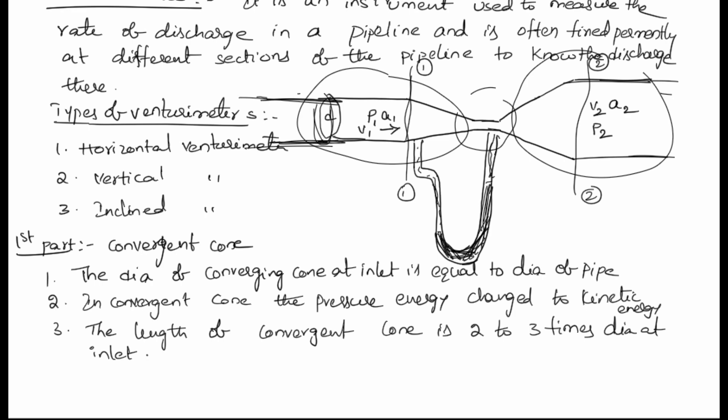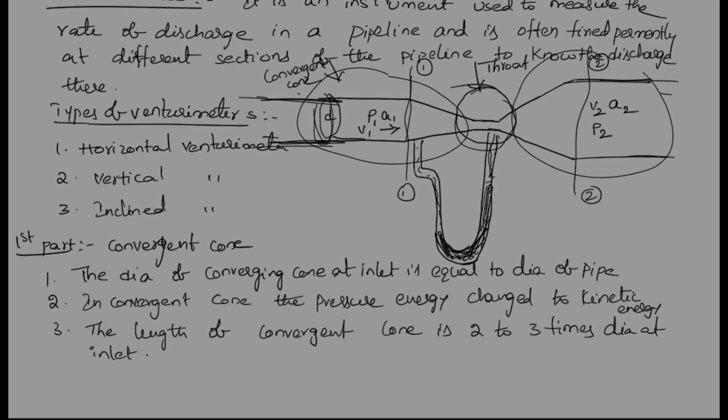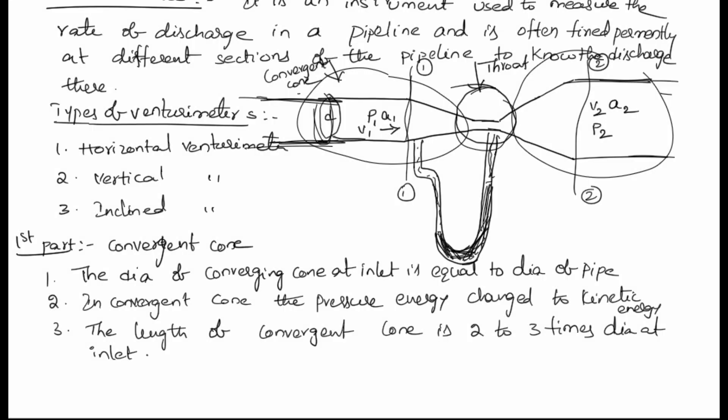The second part of the venturi meter is the throat. The throat is the continuation of the convergent cone — as the area goes on decreasing it becomes a very small area, and that part is called the throat. From the convergent cone, velocity goes on increasing and pressure goes on decreasing, so at the throat the pressure is completely decreased — low pressure and high velocity are present at the throat.